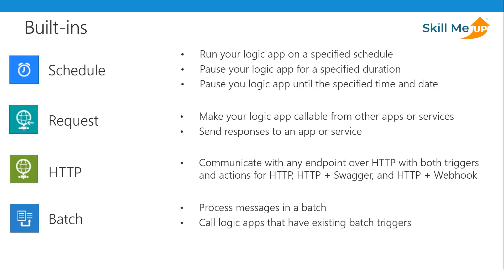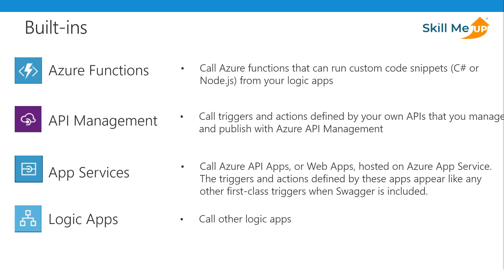When creating your Logic App you can define how it runs. You can set it up to run on a schedule — a specific duration, time, or date. You can set it up as a request so it's available to be called from other Logic Apps or services. HTTP allows communication with any endpoint for both triggers and actions, including HTTP plus Swagger and HTTP plus Webhook. Batch allows messages to be processed in batch. Other built-in connections include Azure Functions, API Management, App Services, and calling additional Logic Apps.